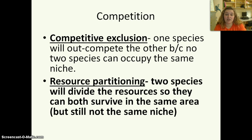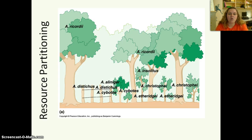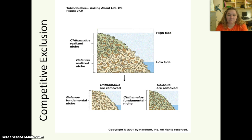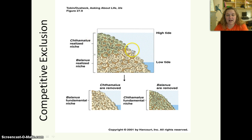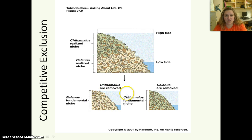There are two types of competition: competitive exclusion and resource partitioning. In competitive exclusion, one species is going to out-compete the other. Here we see thalamus barnacles and balanus barnacles. If we remove the thalamus barnacles, the balanus barnacles do really well. Same thing if we remove the balanus — then the thalamus are going to do really well.